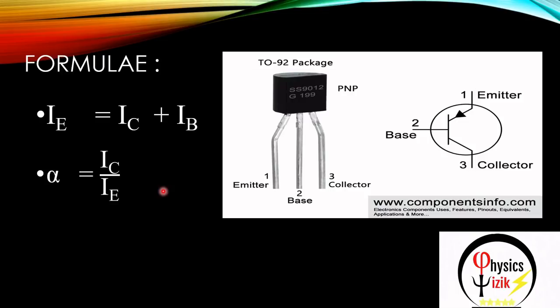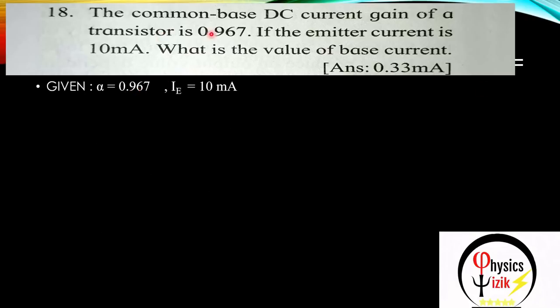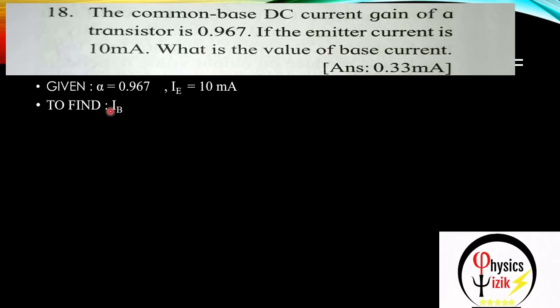The first sum: the common base DC current gain of a transistor is 0.967. If the emitter current is 10 milliampere, what is the value of the base current? What is given: alpha = 0.967 and emitter current IE = 10 milliampere. We need to find the base current IB.